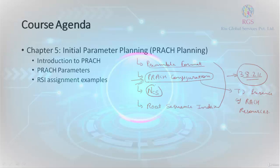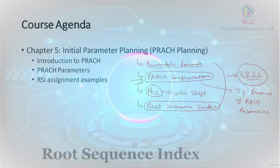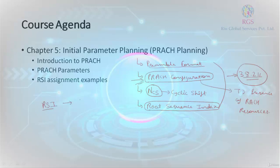Next is cyclic shift. In order to understand cyclic shift, we need to also understand root sequence index. Root sequence index or RSI and cyclic shift are very much correlated with each other. If you remember, there were two types of preamble formats: long formats and short formats.